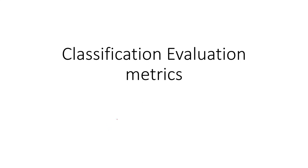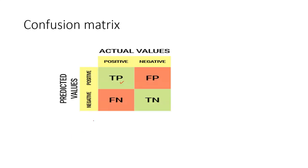In this second video about classification evaluation matrix, the performance of a classification model is completely based on the counts of test records correctly and incorrectly predicted by the model. The confusion matrix provides a more insightful picture — not only the performance of the predicted model, but also which classes are being predicted correctly and incorrectly.